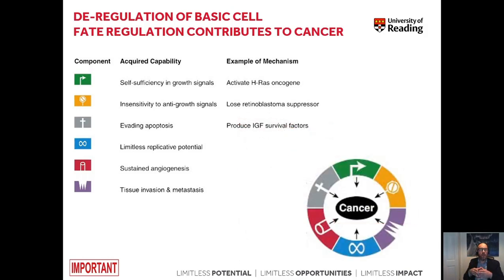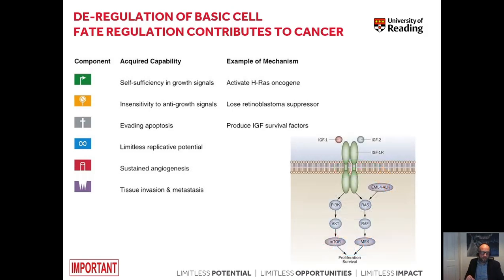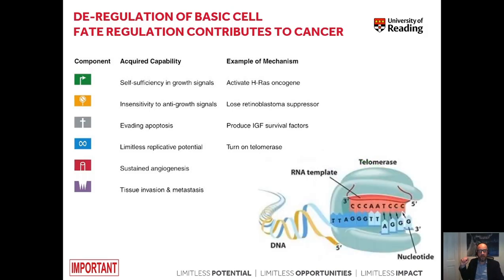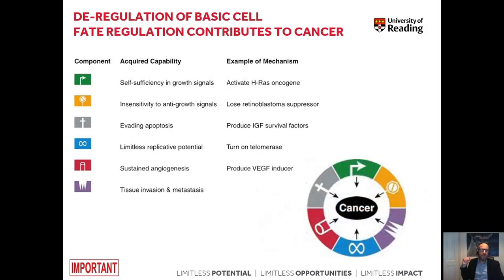Cancer cells evade apoptosis by producing IGF, which is the main survival factor covered in session one. They also turn on telomerase, producing telomere repeats and thus are not affected by cellular aging. They also produce VEGF, which is responsible for angiogenesis, and can activate certain proteins present on the surface of the cell that contribute to tissue invasion.